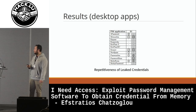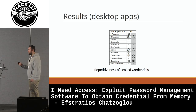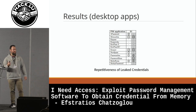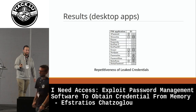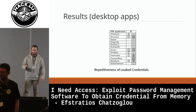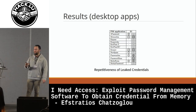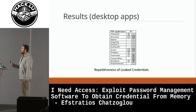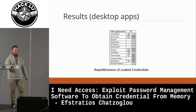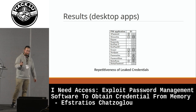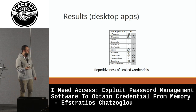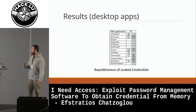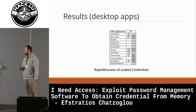Here we see the same table with information about repeativeness. This means that the same type of credentials is stored and can be accessed multiple times within the process. Specifically for Bitwarden, we found the master credentials approximately 21 times within the process.